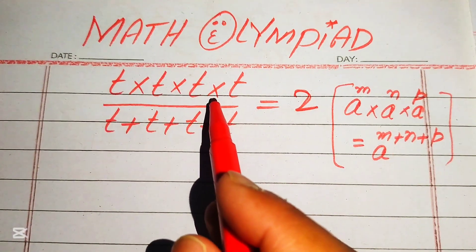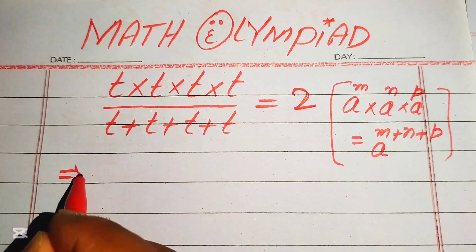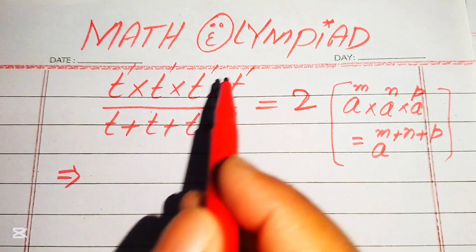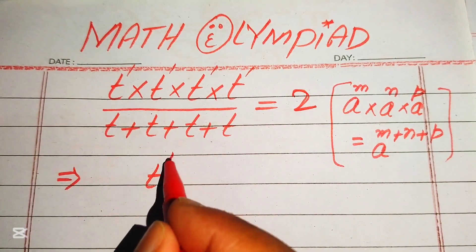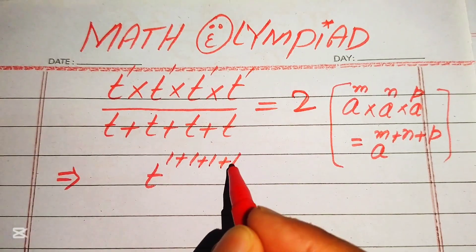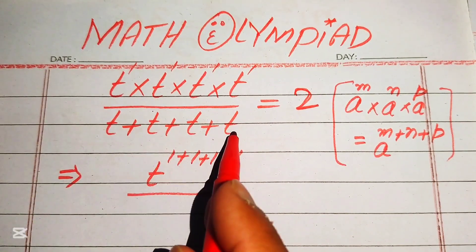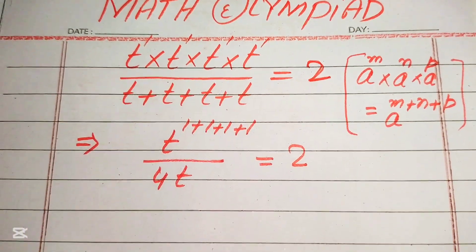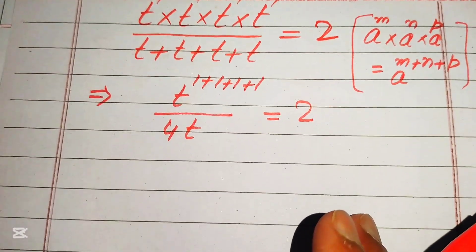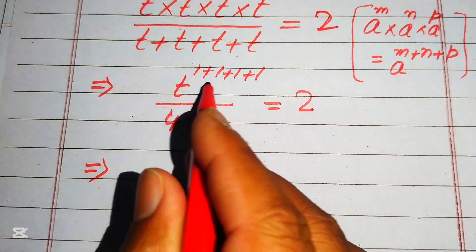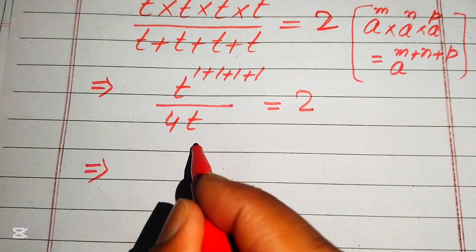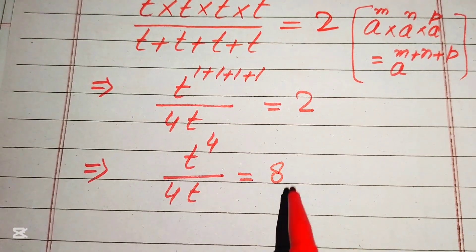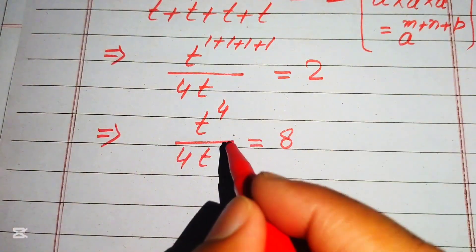According to this exponent law, we equate the exponents of this term. The bases of all four terms are the same, so we add the exponents — all are 1. It will be written as t to the power of 1 plus 1 plus 1 plus 1, divided by 4 times t, and this equals 2. Simplifying, 1 plus 1 plus 1 plus 1 gives t to the power of 4 divided by 4t equals 2.